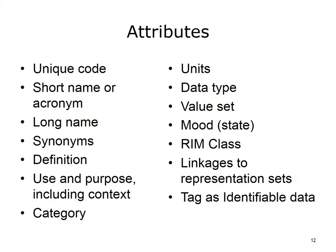The attributes of a data element enable unambiguous understanding and effective use of the element. Knowledge can be coupled to the data element through its attributes. Attributes might include: unique code, short name or acronym, long name, synonyms, definition, use and purpose including context, category, units, data type, value set, mood, state, RIM class, linkages to representation sets, and a tag as person identifier data.